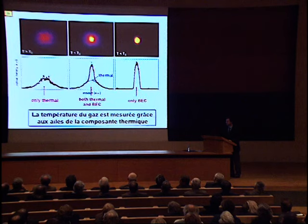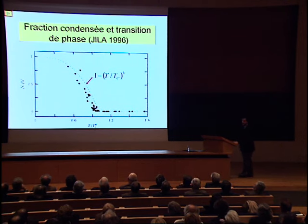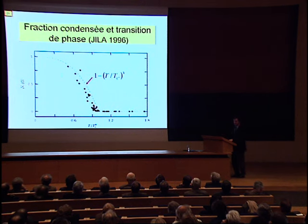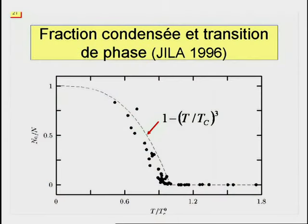À partir de ce type d'image, on peut extraire la fraction d'atomes qui occupe le condensat de Bose-Einstein et mesurer ses variations en fonction de la température. La courbe montre un comportement très clair. Au-dessous de la température critique, la fraction d'atomes dans le condensat est finie. Au-dessus, elle vaut pratiquement zéro. La courbe montre donc une preuve très nette de la transition de phase associée à la condensation de Bose-Einstein.